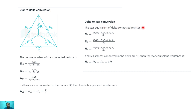Now for delta-to-star conversion: the star equivalent of a delta-connected resistor — to calculate R1, R1 equals (Ra·Rb + Rb·Rc + Rc·Ra) / Rc. To calculate R2, it is (Ra·Rb + Rb·Rc + Rc·Ra) / Rb.